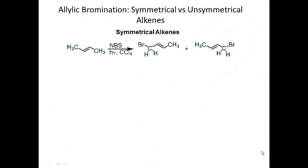Now let's talk about symmetrical versus unsymmetrical alkenes. This is an example of a symmetrical alkene — notice the two ends are identical. This is an allylic site, and so is this. If I react this under allylic bromination conditions, I'm going to get bromine at this site or this site. But it doesn't matter which end bromine adds from — you still get the same product.